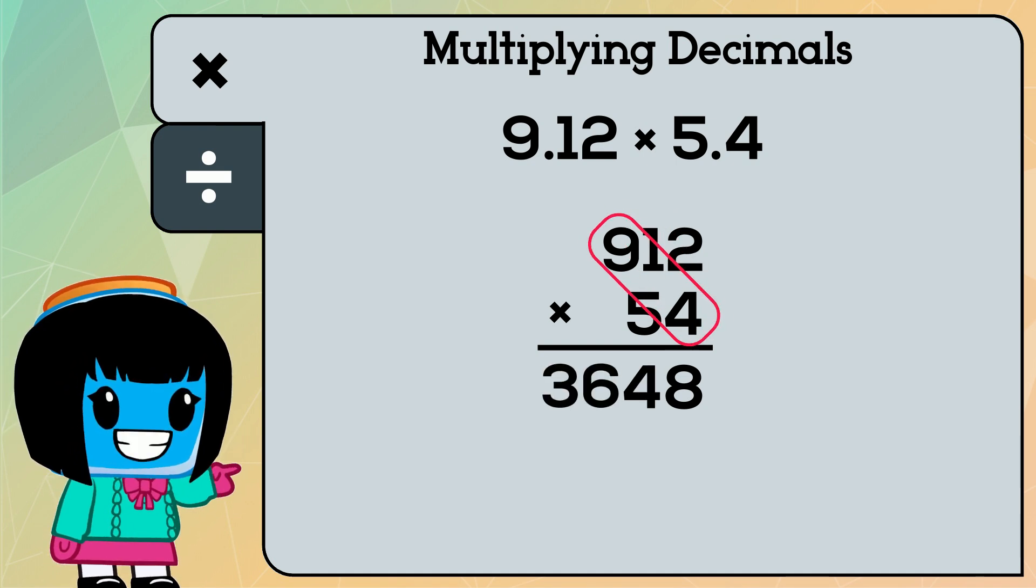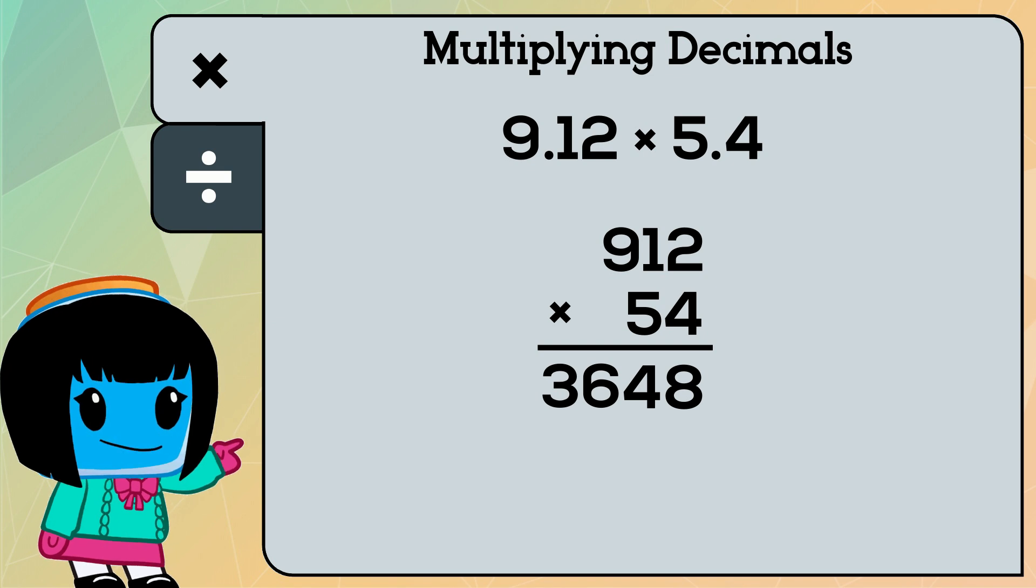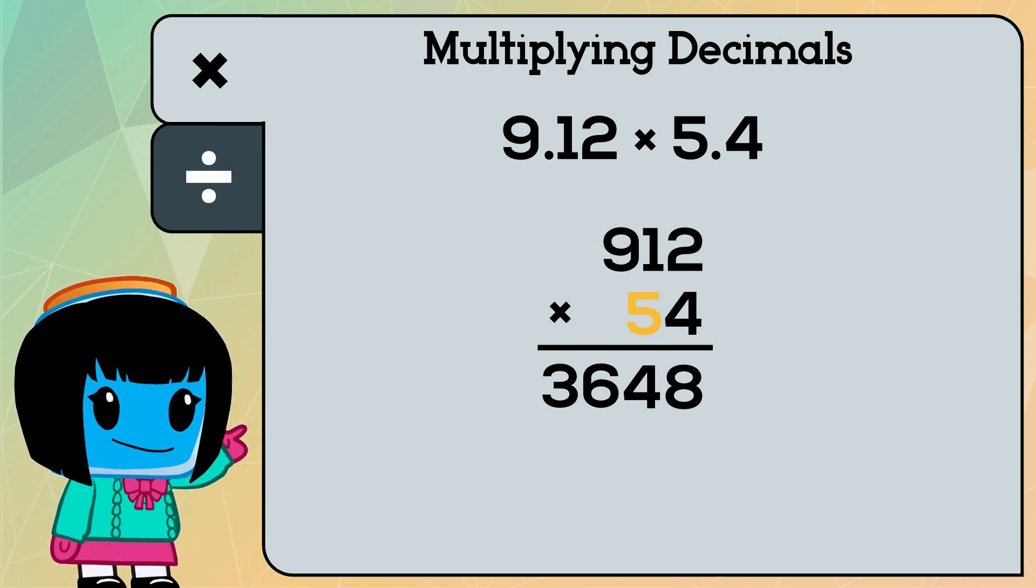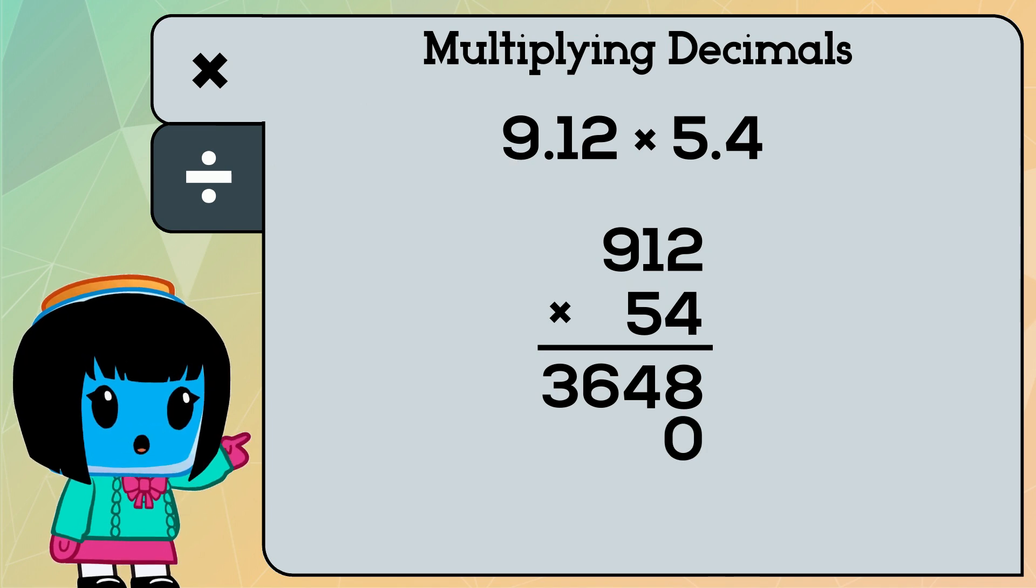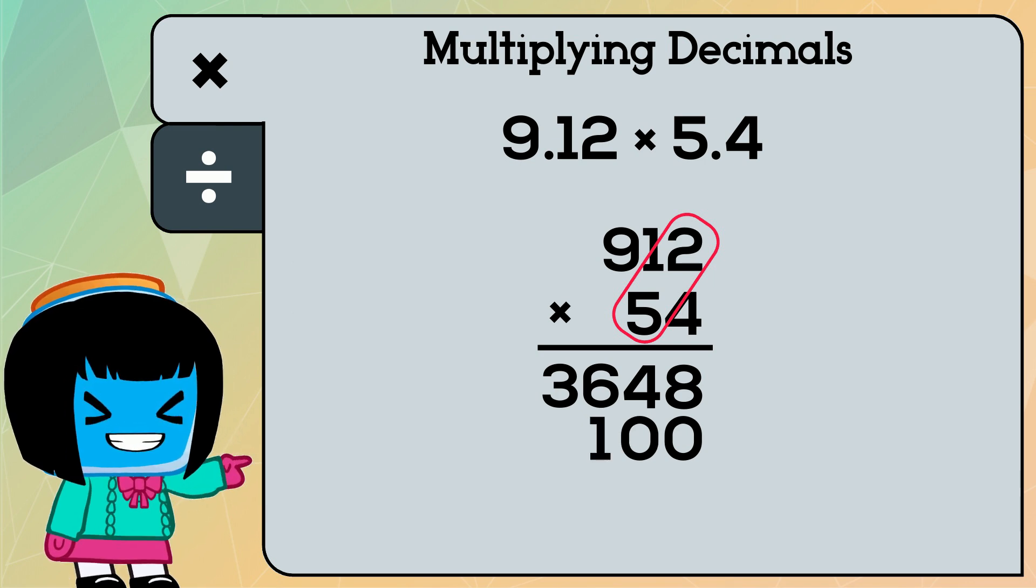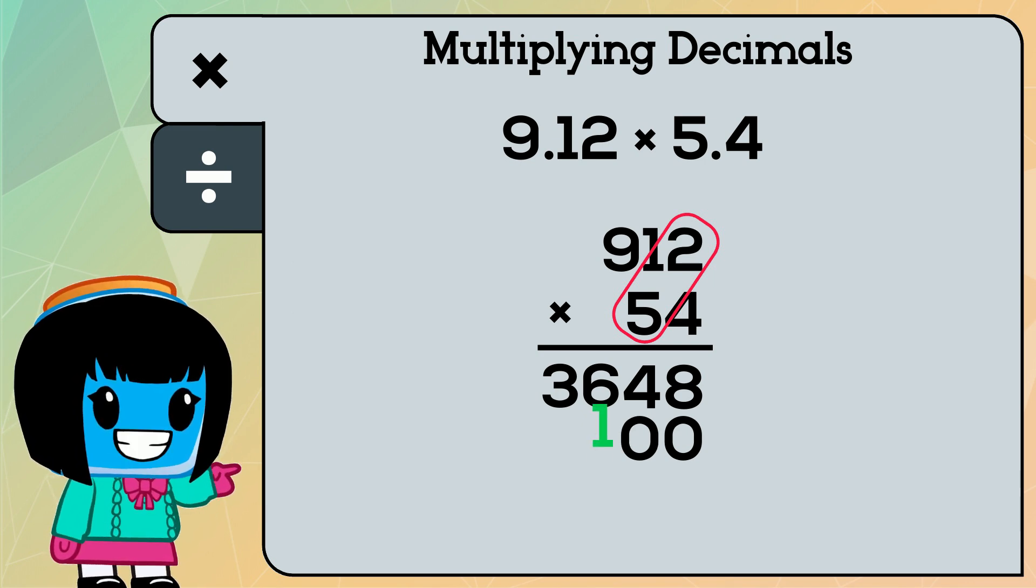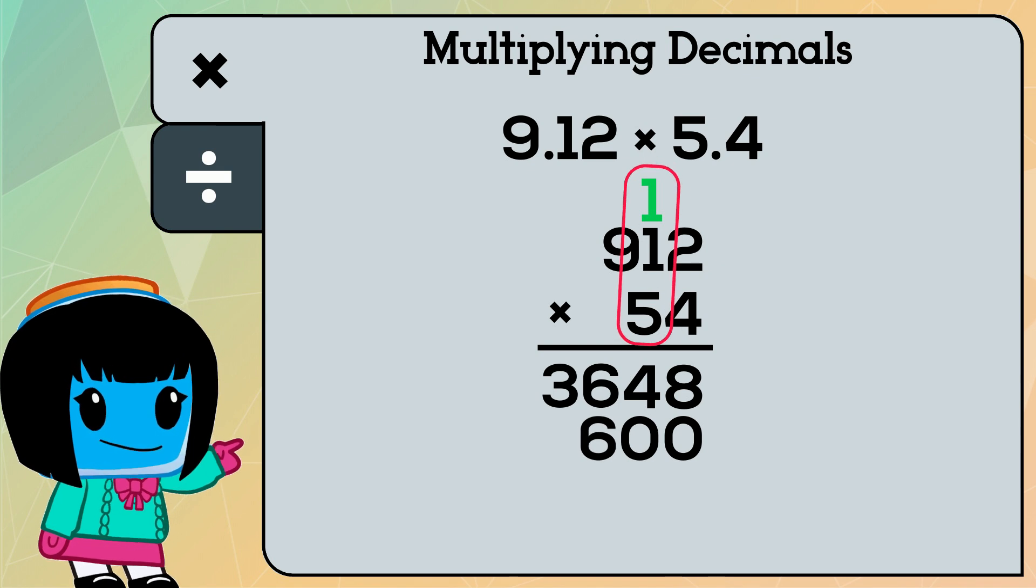Now that we've multiplied each digit by 4, we'll do the same process but multiplying by 5. We'll write 0 as a placeholder in the second row. Since 5 times 2 is 10, we write 0 and carry the 1, then continue multiplying.